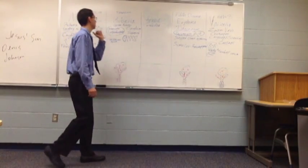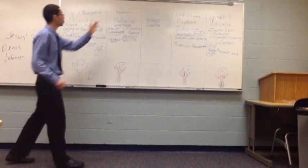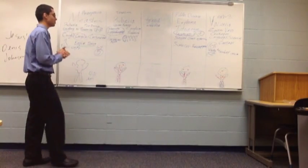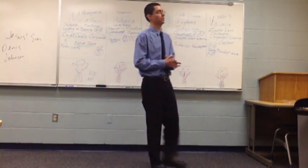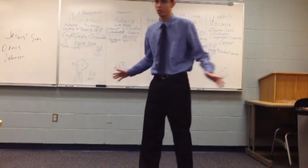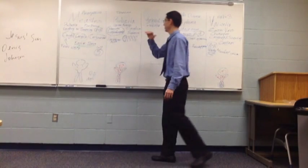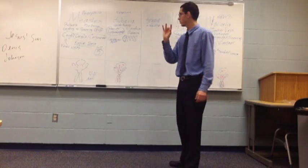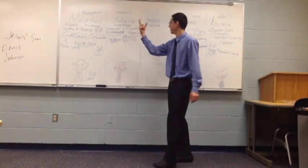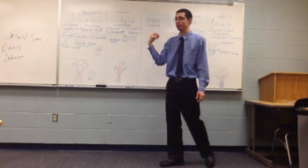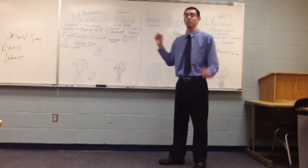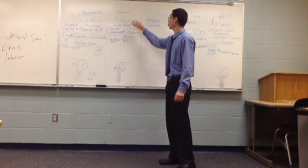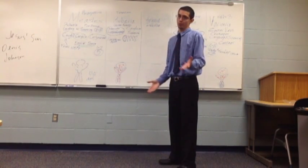Next, rubella. Rubella is caused by the togavirus. It's also called German measles. How do you get rubella? The same way you can get measles — respiratory droplets, coughing or sneezing. After the patient is exposed to rubella through coughing or sneezing from another person, they will develop rubella in two to three weeks.